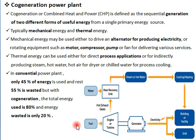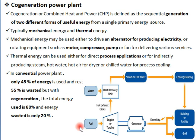This is the main principle of the co-generation power plant. Now, considering efficiency: in a conventional power plant, fuel is applied to a boiler, steam strikes the turbine, electricity is produced, and the steam is condensed. In a conventional power plant, only 45 percent of energy is utilized. The remaining 55 percent is wasted through flue gases exhausted via the chimney to the atmosphere.